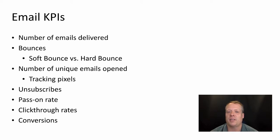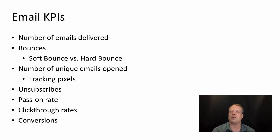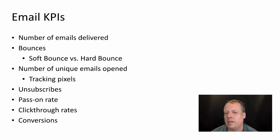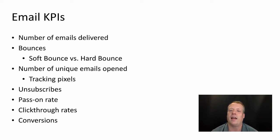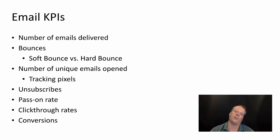You can look at the number of emails delivered and bounces. There's a difference between a soft bounce and a hard bounce — a soft bounce means the content can't be delivered right now but might be later, for example because the user has too much mail in their mailbox. A hard bounce means the user no longer exists.